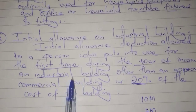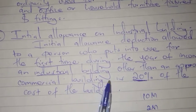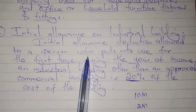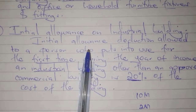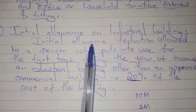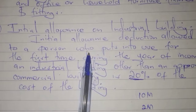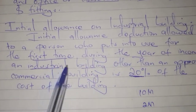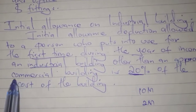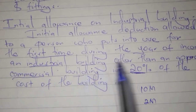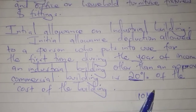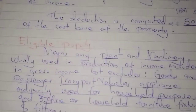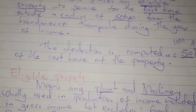An approved commercial building is not considered an industrial building. So the initial allowance on industrial building is a deduction allowed to a person who puts into use for the first time during the year of income an industrial building other than an approved commercial building, at 20% of the cost of the building. We shall look at this more through examples.